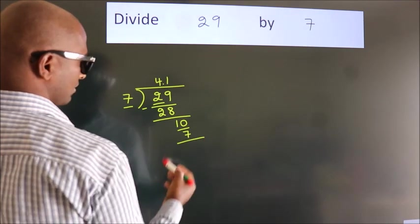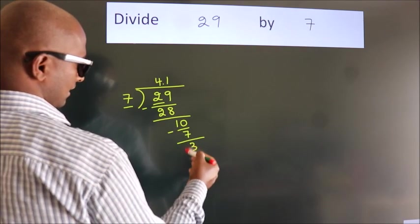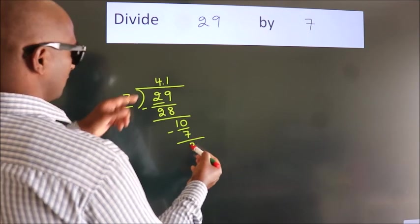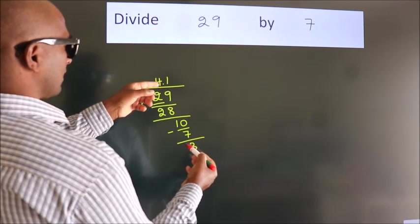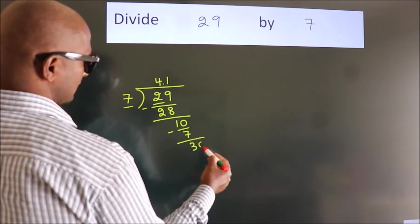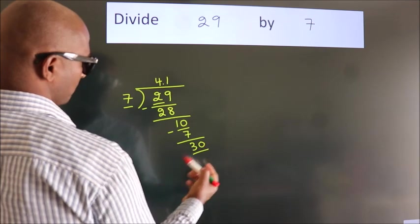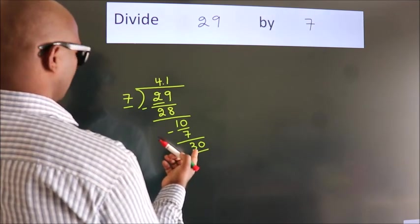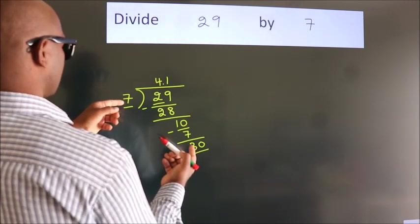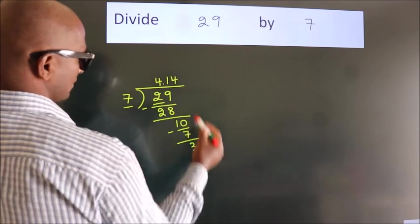Now we subtract. We get 3. After this, we already have the decimal, so directly take 0. So 30. A number close to 30 in the 7 table is 7 times 4 is 28.